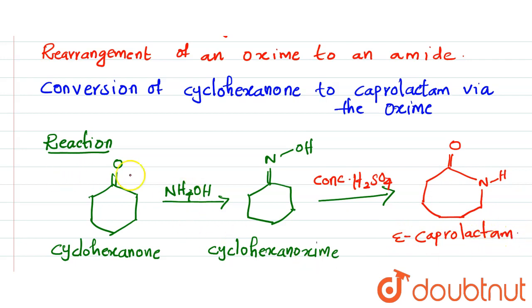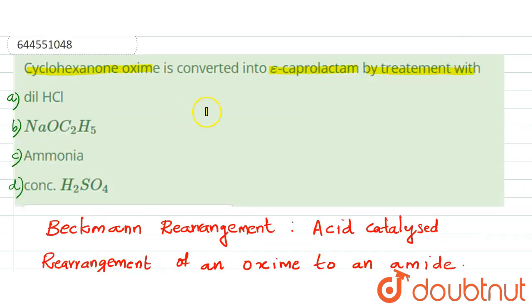Okay, so this is the Beckman rearrangement reaction. Here we can convert cyclohexanone oxime to epsilon caprolactam by using concentrated sulfuric acid. So the answer is cyclohexanone oxide is converted to epsilon caprolactam by treatment with option D, concentrated sulfuric acid.